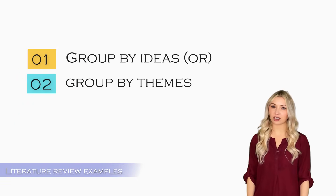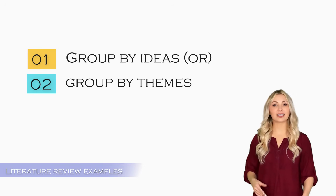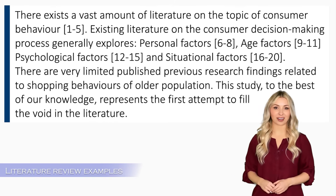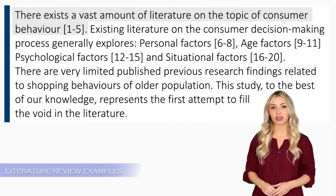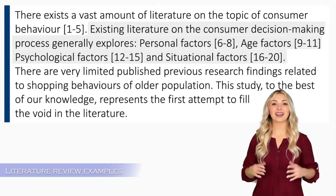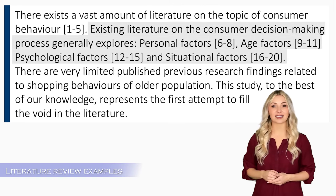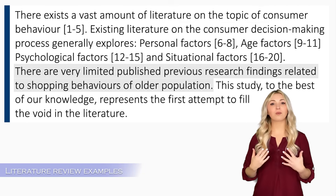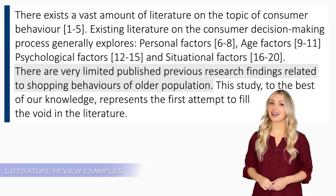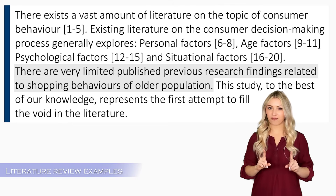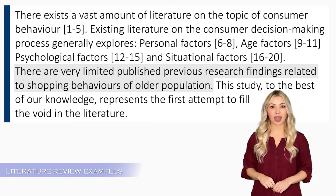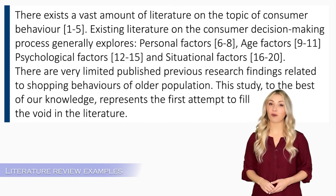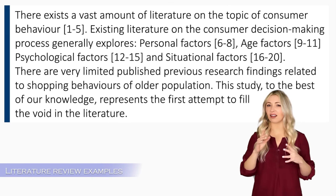When you are dealing with large amounts of literature, it's a good idea to group them by ideas before presenting them in your literature review. Here is an example from a business paper that deals with the consumer behavior of the older population. The author starts with a broad statement that there is a lot of literature on the topic of consumer behavior. Then the author groups articles by ideas and presents them in the text — almost 20 references are cited in the first two lines. Then the author establishes the research gap: there are plenty of studies about general consumer behavior, but very limited studies specifically dealing with the consumer behavior of the older population, and their study represents the first attempt to investigate this issue. You can follow this format when you are short on space but have to include a lot of references.